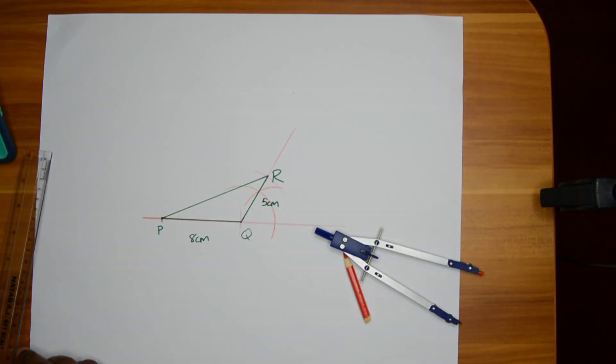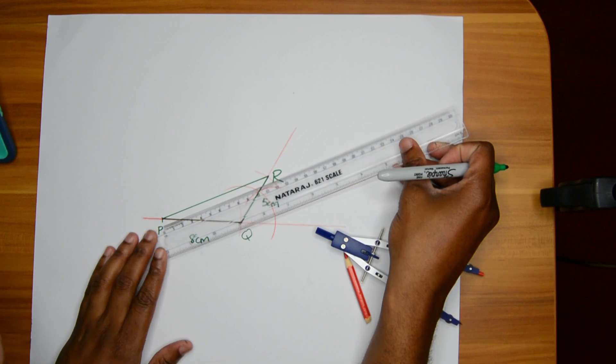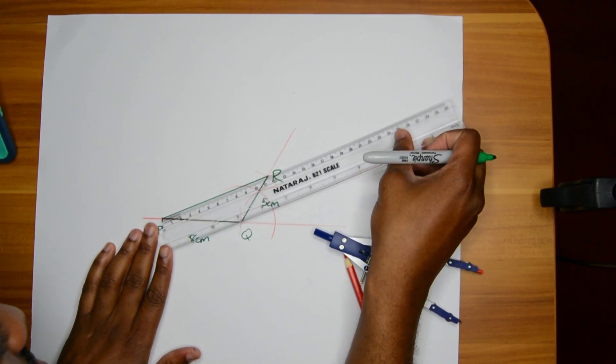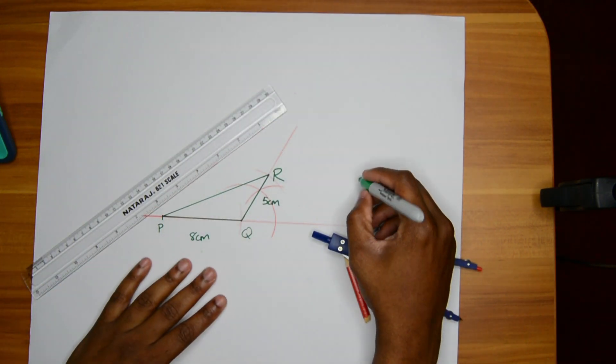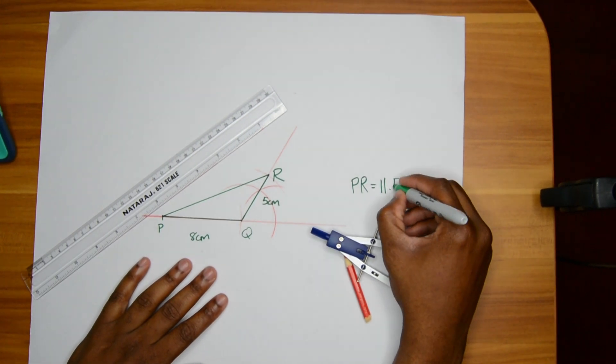Now it's time to measure and see the length of PR. Time for the ruler to shine. PR looks like 11.5. So I'll write PR is equal to 11.5 cm.